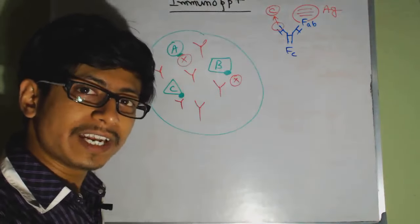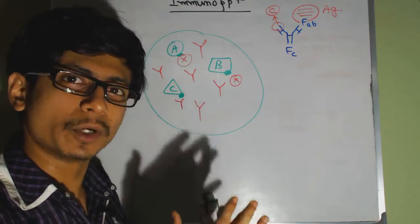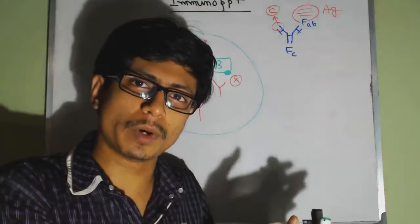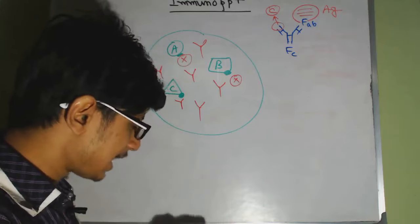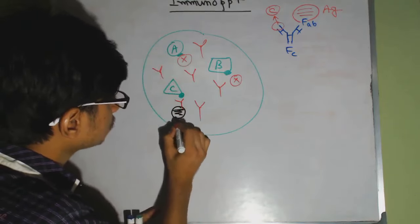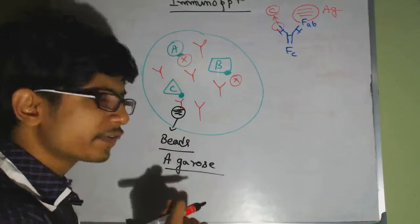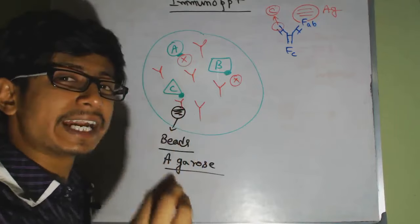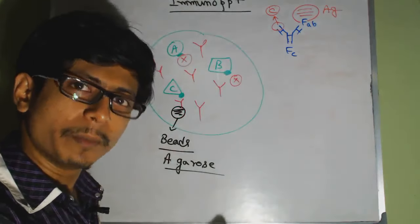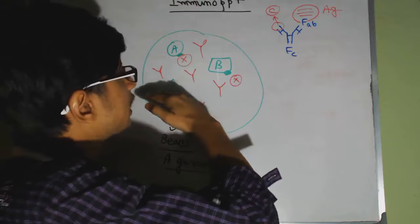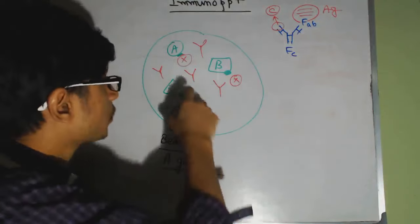To drag the antigen-antibody complex down, we need to add insoluble particles that help in precipitation. Once the antigen-antibody complex is formed, we need to precipitate it down. The precipitants used here are beads — agarose beads or different types available in the market — which are fixed with the antibody. This creates a pellet, and we remove the supernatant, then release the antigen-antibody complex from the bead.